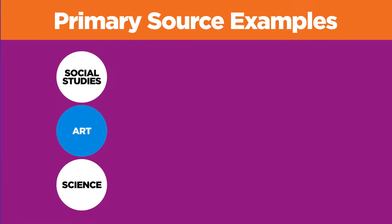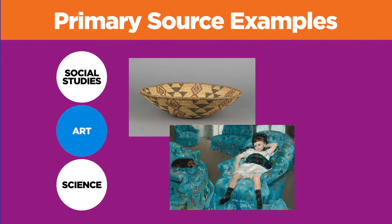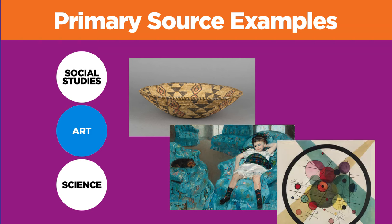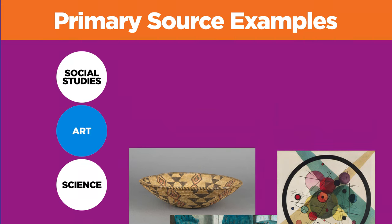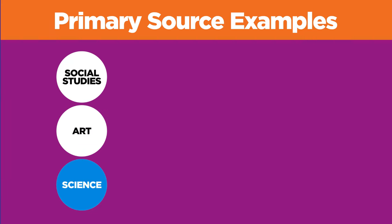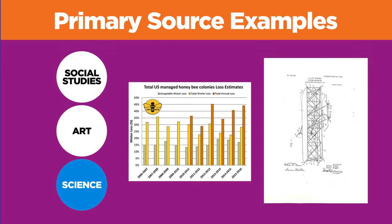For art, you may find a willow basket by an Apache Indian artist, Mary Cassatt's painting Little Girl in Blue Armchair, or Vasily Kandinsky's painting Circles in a Circle. As for science, you may find statistics about the decline in the population of bees, or a drawing from the Wright Brothers' patent for their flying machine.